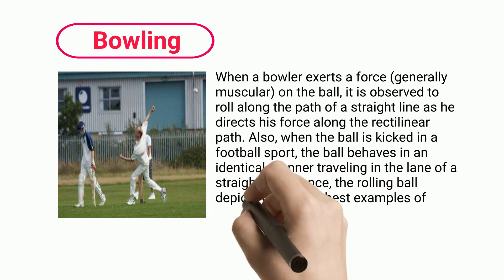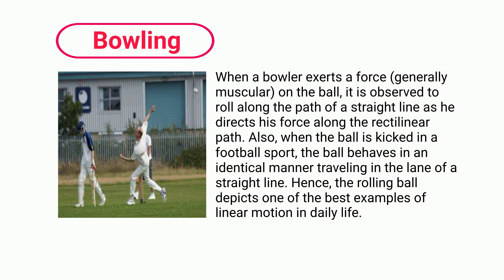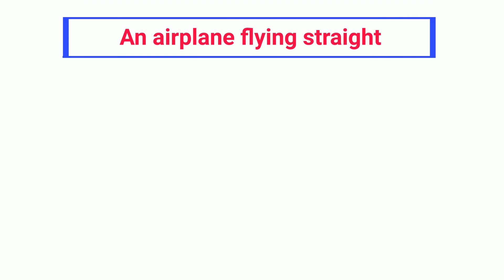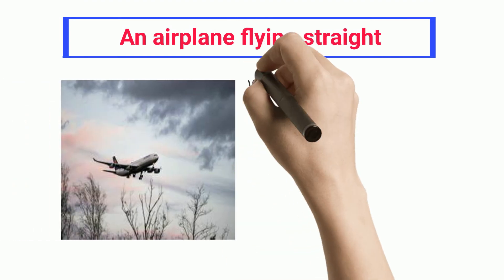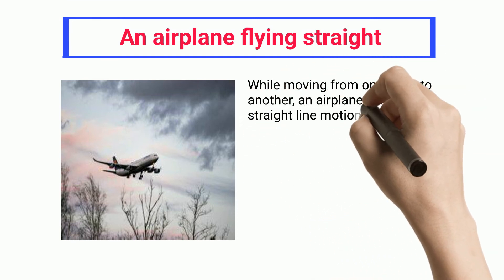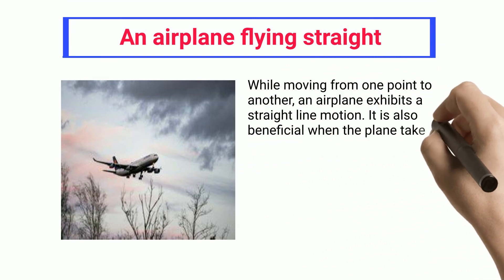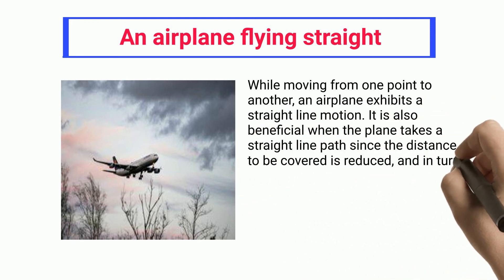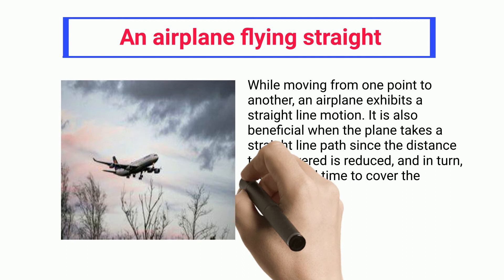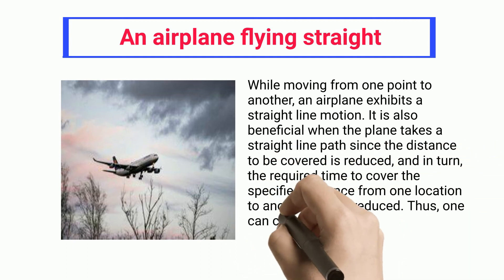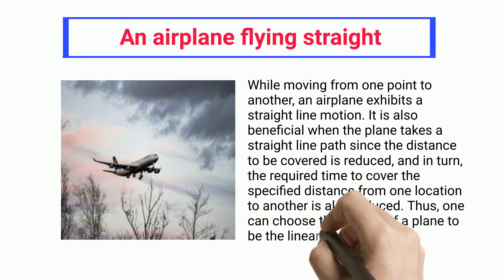An airplane flying straight: while moving from one point to another, an airplane exhibits a straight line motion. It is also beneficial when the plane takes a straight line path since the distance to be covered is reduced, and in turn, the required time to cover the specified distance from one location to another is also reduced. Thus, one can choose the motion of a plane to be the linear type of motion.